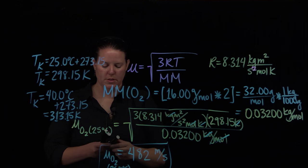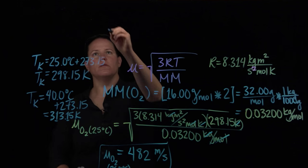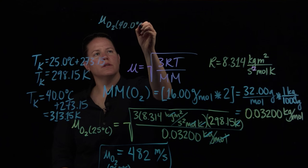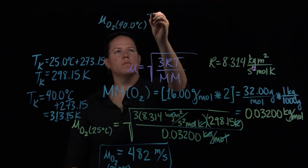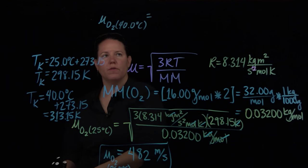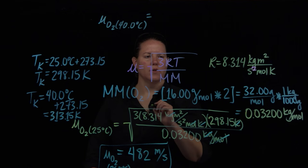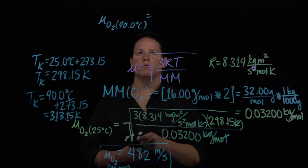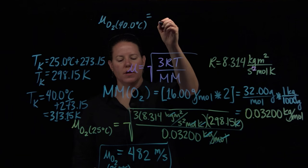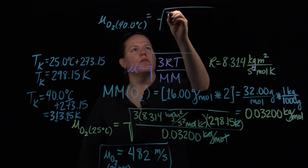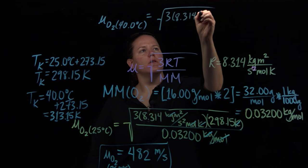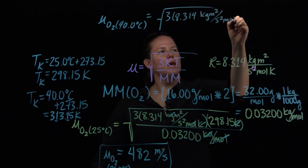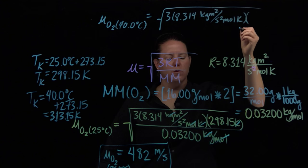Still using the same equation. We're going to do the root mean square velocity of O2 at 40°C. Let's do the calculation in blue and then I'll do the answer in green. So root mean square velocity, 3 times 8.314 kg·m²/s²·mol·K.